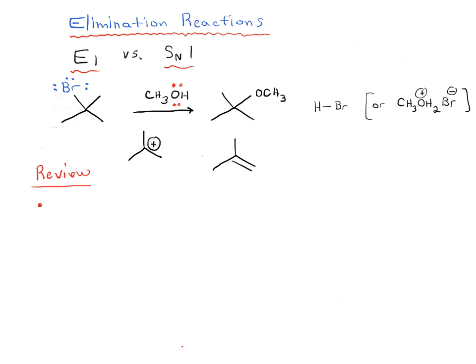So remember the first step in both of these reactions is that the leaving group leaves. This is always the first step and this is actually the slow step. The slow step just depends on the concentration of our substrate, so the rate law is always unimolecular.